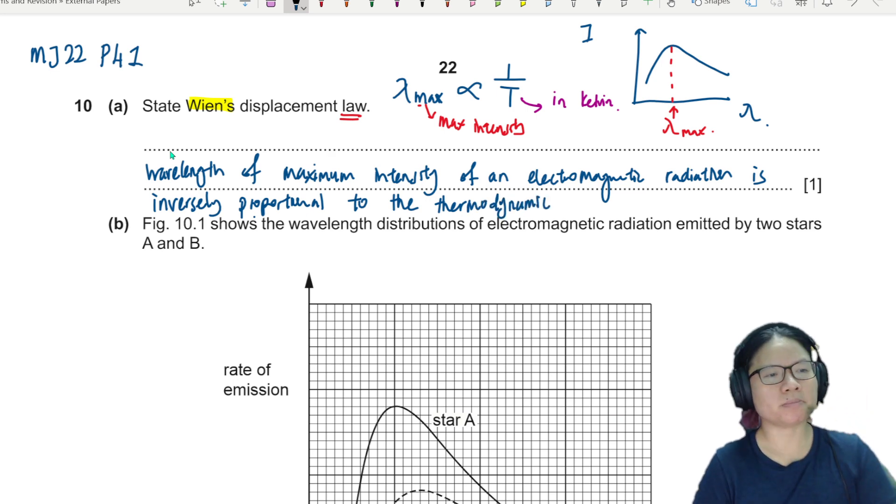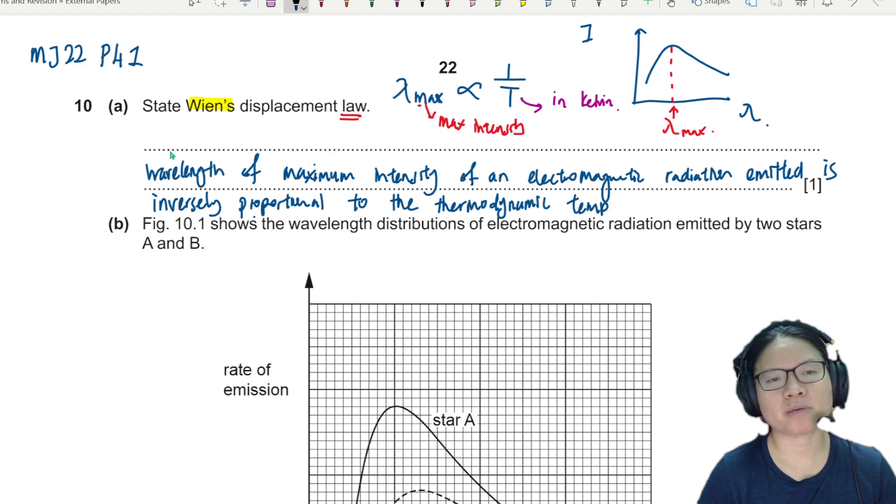So I think putting it all together, I will say that the wavelength of the maximum intensity of an EM radiation, electromagnetic radiation, is inversely proportional to the thermodynamic surface temperature of a star. So we have a maximum intensity of electromagnetic radiation emitted is inversely proportional to the thermodynamic temperature, surface temperature of any object. This is good enough.